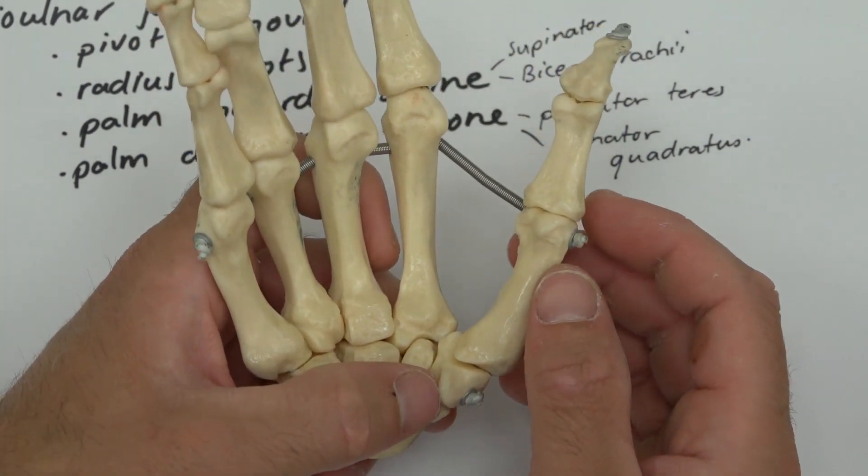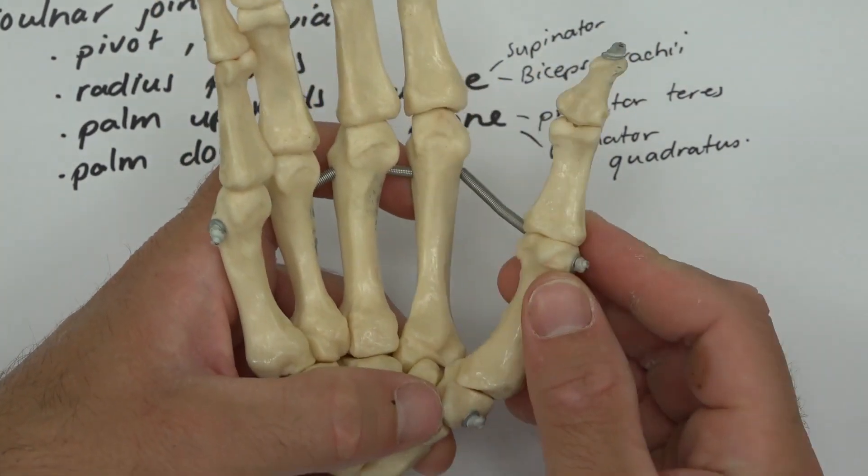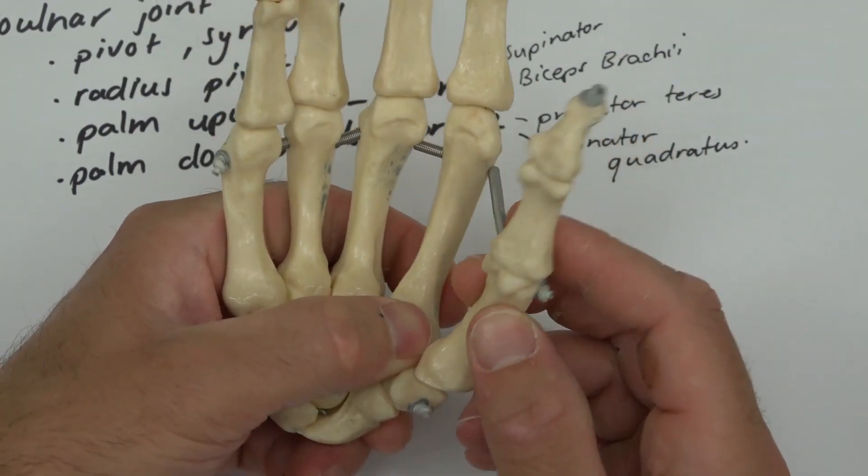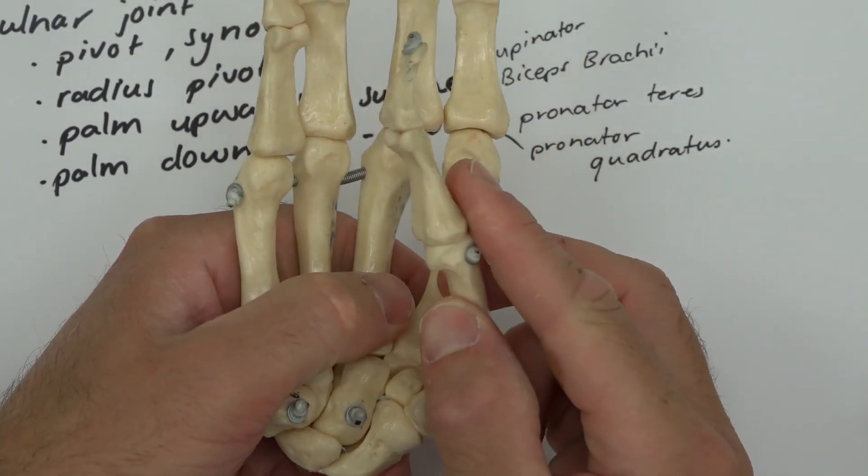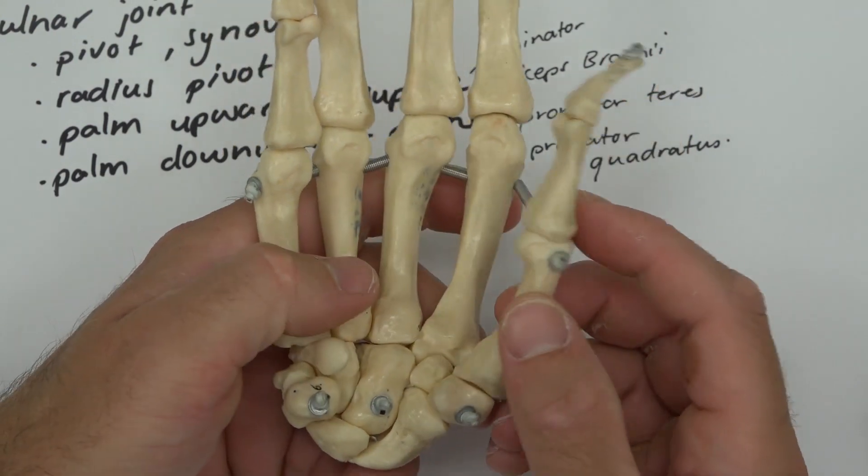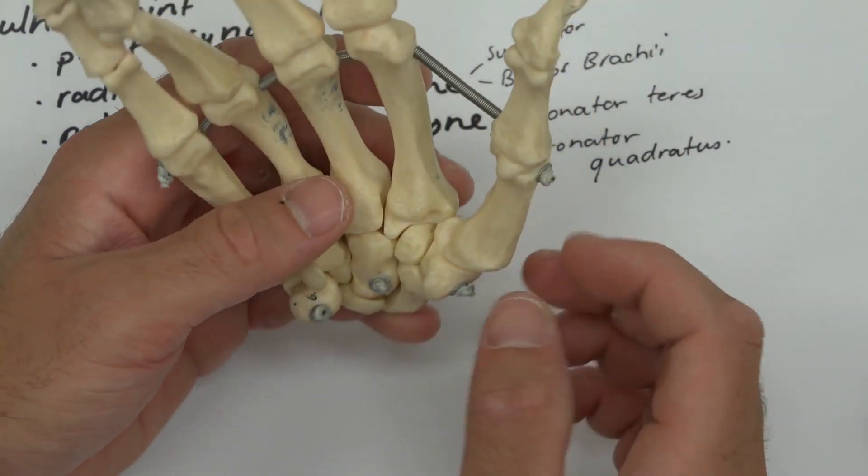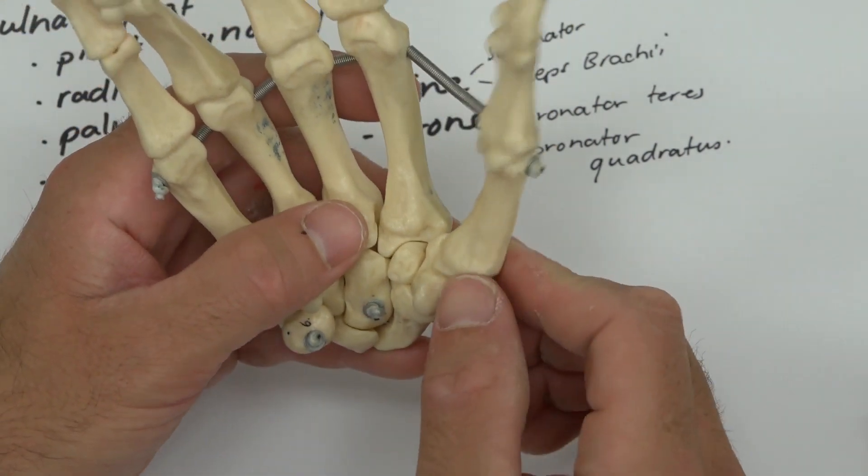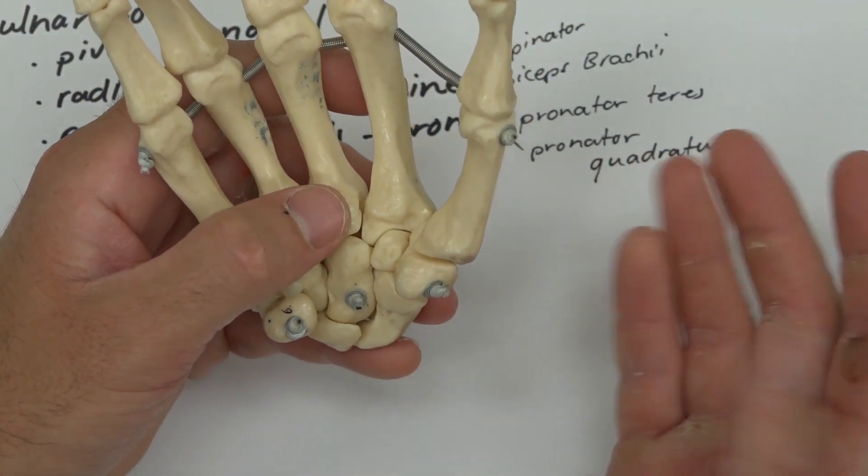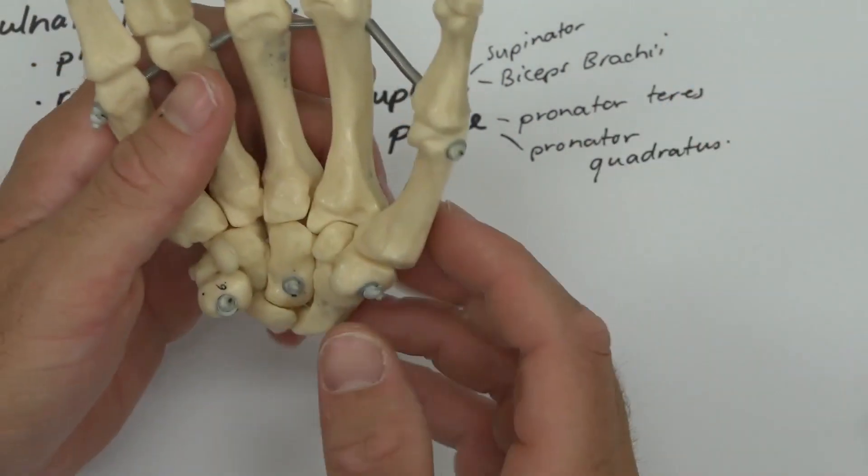This joint allows your thumb to adduct, abduct, flex, extend, and then come all the way across here to see your pinky finger—that's called opposition. This joint here is highly mobile and you use it quite a lot, so the term opposable thumbs comes from this.